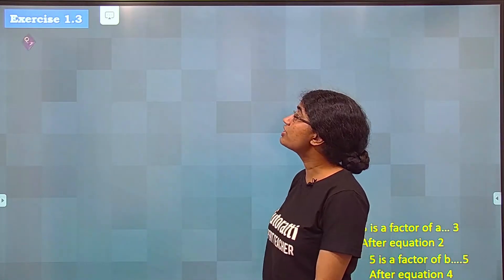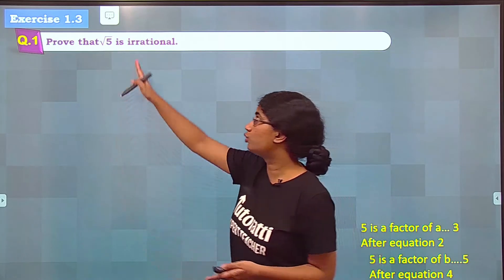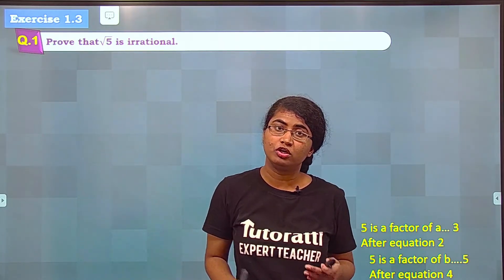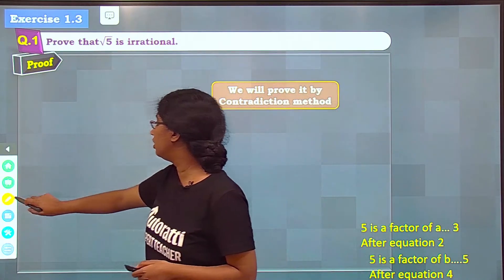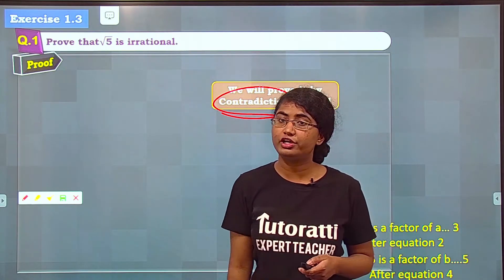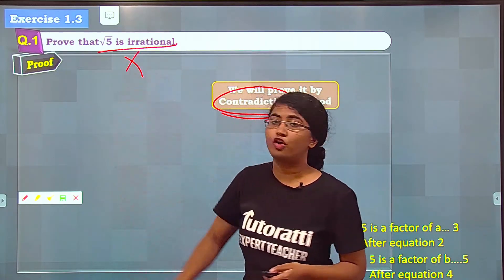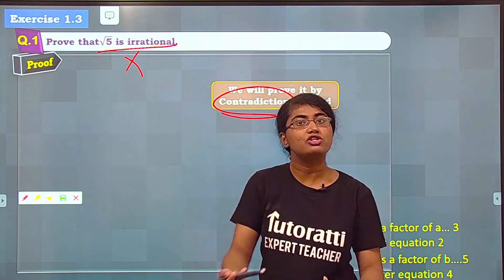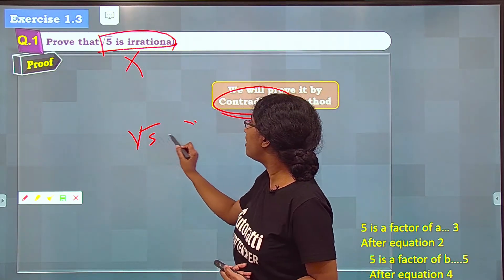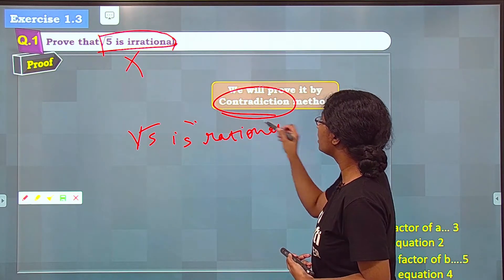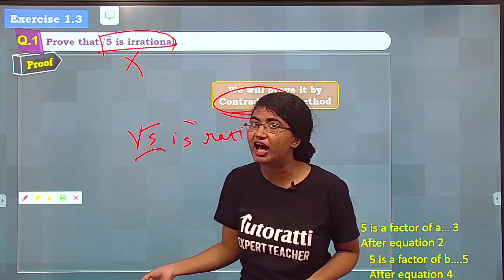The first question from exercise 1.3 is to prove that a particular number is irrational. You already know that √5 is irrational, but how are you going to mathematically prove it? The proof begins with contradiction. Contradiction means: whatever is to be proven, assume that it is false. So since we need to prove √5 is irrational, we contradict it by assuming √5 is rational.